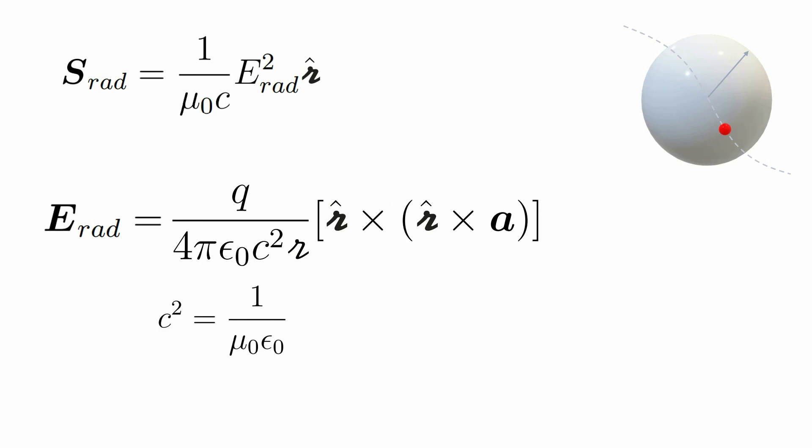Substituting the relation between the permeability, permittivity, and the speed of light, we can rewrite the equation as follows.